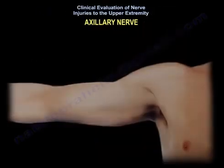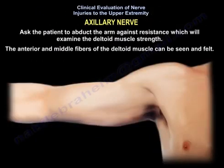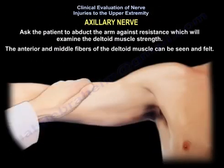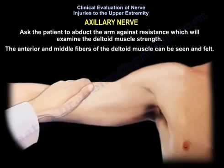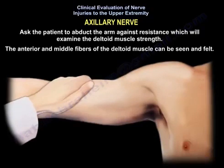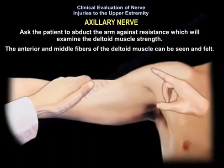How do you examine for axillary nerve injury? Ask the patient to abduct the arm against resistance, which will examine the deltoid muscle strength. The anterior and middle fibers of the deltoid muscle can be seen and felt.